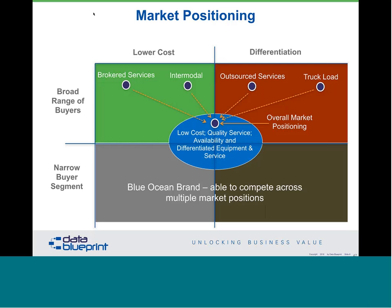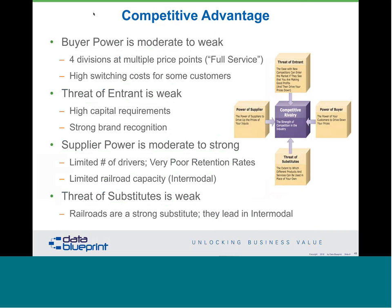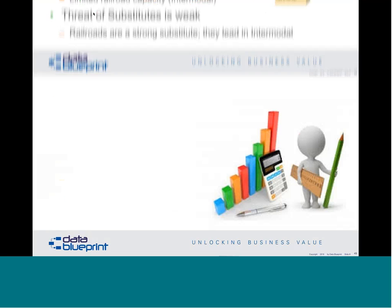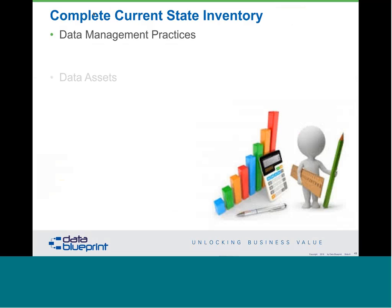Looking at this from a strategic perspective, they had four different businesses. Brokered services were low cost, broad range of buyers. Intermodal was a bit more expensive. Outsource services gave them a differentiation play, and truckload brokering gave them a lot of differentiation. What they needed to do was act as a single company — because what would happen is somebody would call and say 'can you move something from place A to place B?' and they'd say 'we're at capacity today,' while there were trucks sitting on the lot. They didn't have visibility, so they needed to change their buyer power situation.